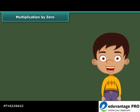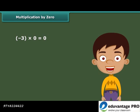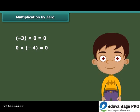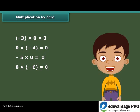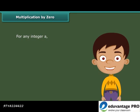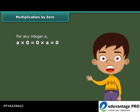The product of a negative integer and 0 is 0. For example, minus 3 into 0 equals 0, and 0 into minus 4 equals 0. Minus 5 into 0 is equal to 0, and 0 into minus 6 is equal to 0. In general, for any integer A, A into 0 is equal to 0 into A, which equals 0.